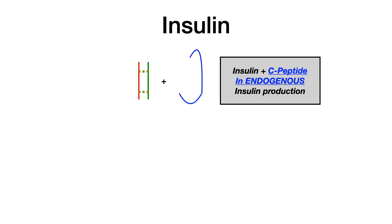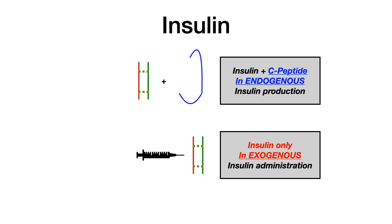Now let's contrast that with somebody who injects themselves with insulin from a vial intended for pharmaceutical purposes. All you're injecting is that disulfide-bonded alpha-beta chain insulin. There's no need to inject the C-peptide fragment — that is just a byproduct of endogenous insulin production. So people with type 1 diabetes injecting themselves are not injecting C-peptide, because pharmaceutical companies just create insulin and don't include that biosynthesis byproduct.